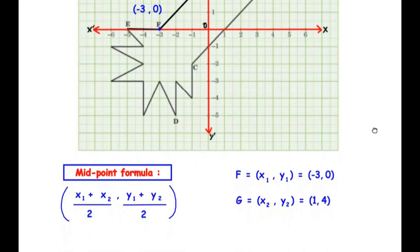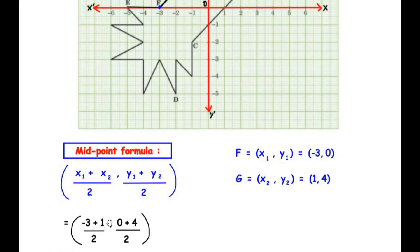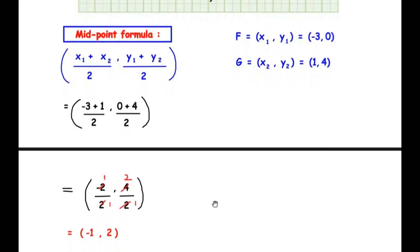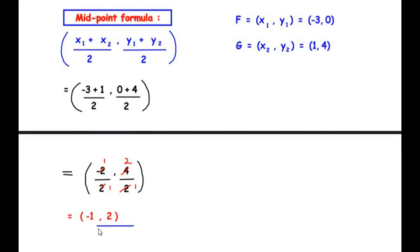Now we substitute these values in the formula: (−3 + 1)/2, (0 + 4)/2. Negative 3 plus 1 simplifies to −2, so we have −2/2 and 0 + 4 gives 4/2. Negative 2 divided by 2 gives −1, and 4 divided by 2 gives 2. So we get the coordinates of the midpoint as (−1, 2). This is the midpoint of the line FG.